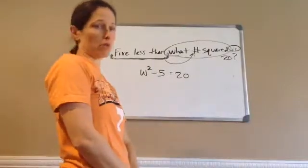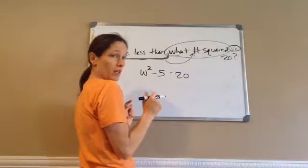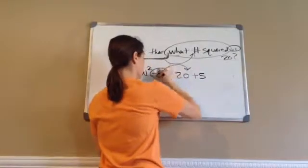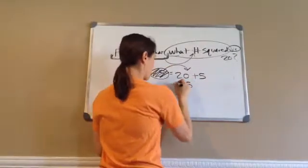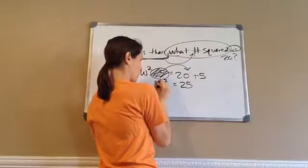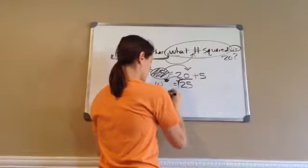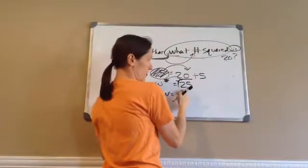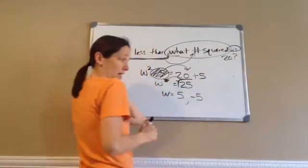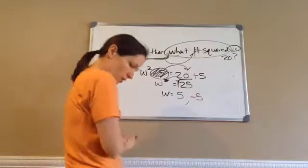So, then let's come up with what W is. I'm going to move my minus 5 to make it plus 5. That gives us 25. And then the square — I have to move it across, and then I have to say the square root. So, W equals the square root of 25, which is 5. But it can also be negative 5, because negative 5 times negative 5 is 25. So, we figured it out. Good job.